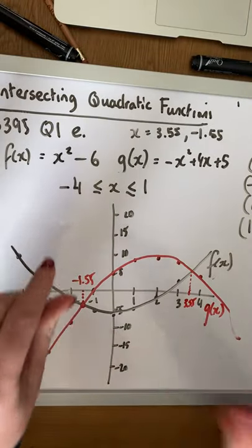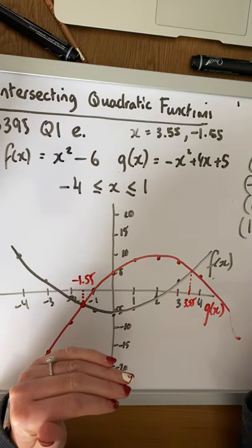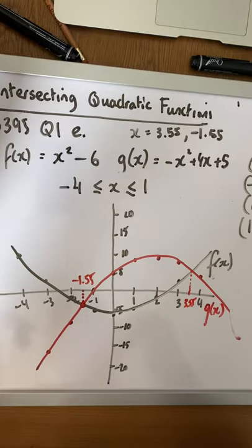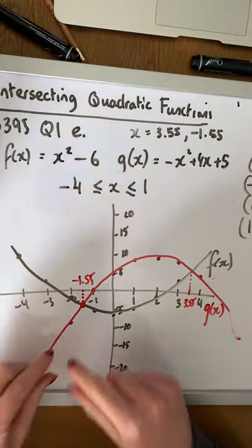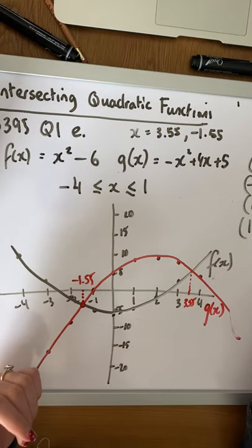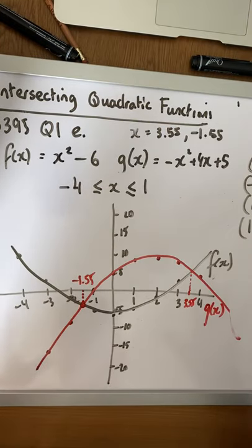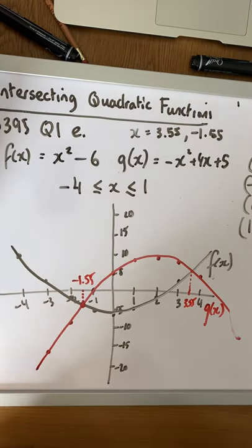Algebraically, you let f of x equal g of x and solve using our normal algebra. And graphically, then, you simply graph both options, label them separately, and look for where the two graphs intersect. Alright. That's it. Hope that makes sense. And I'll leave an assignment on our Google Classroom for today. Thank you.